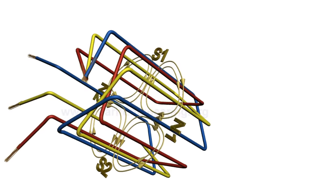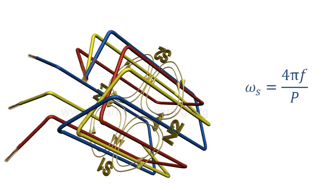So for a general P pole system, synchronous speed is given by this equation.